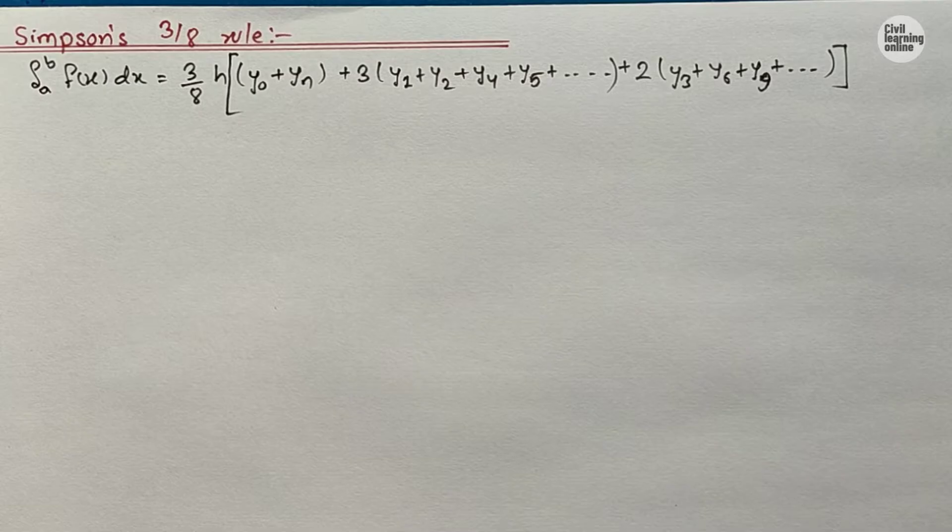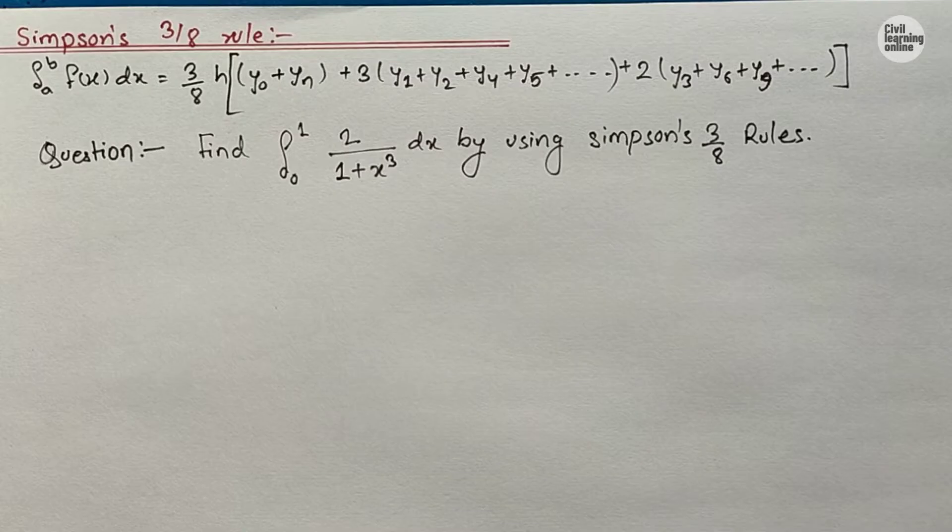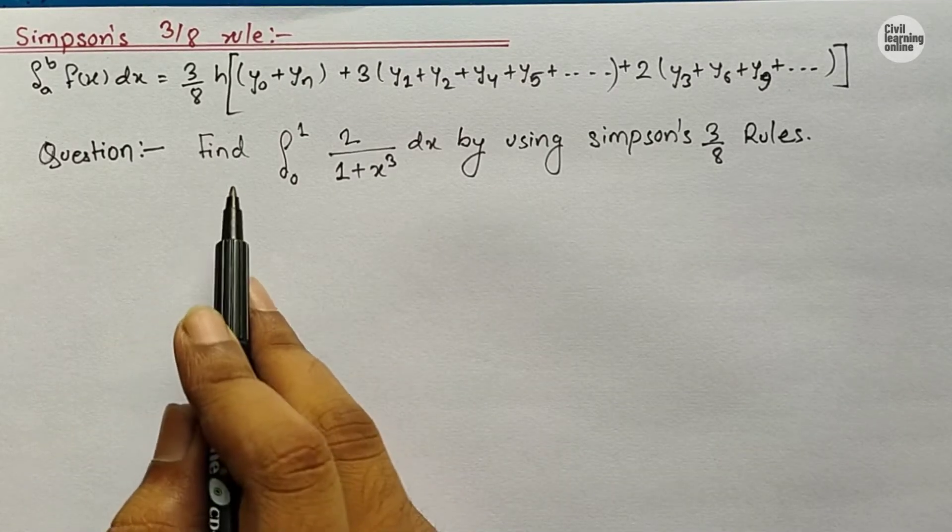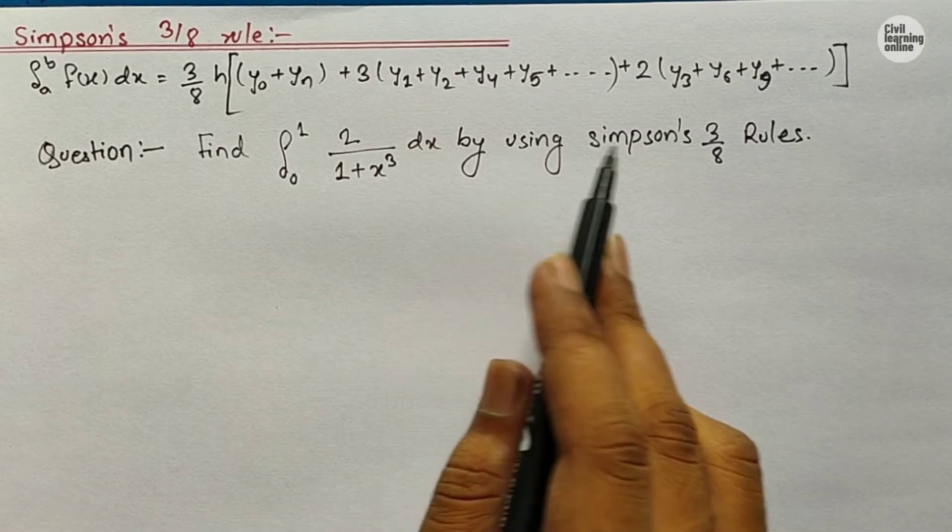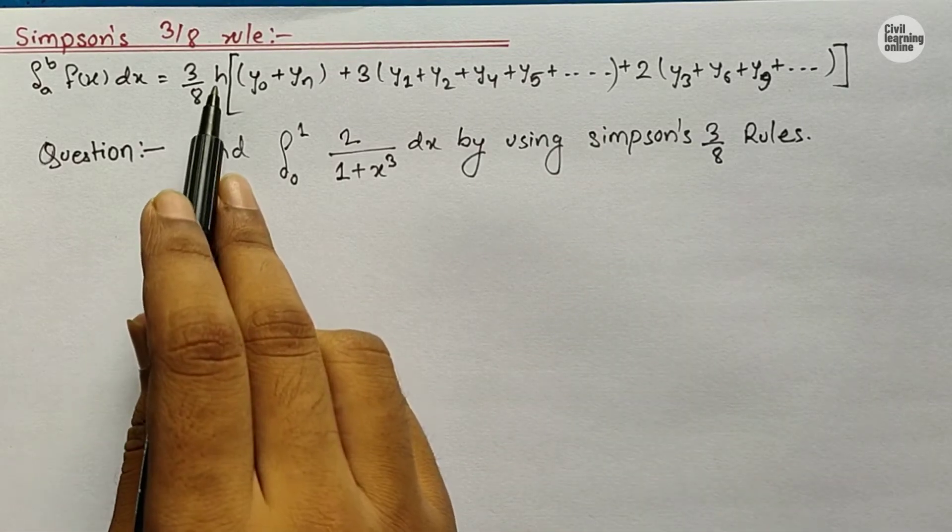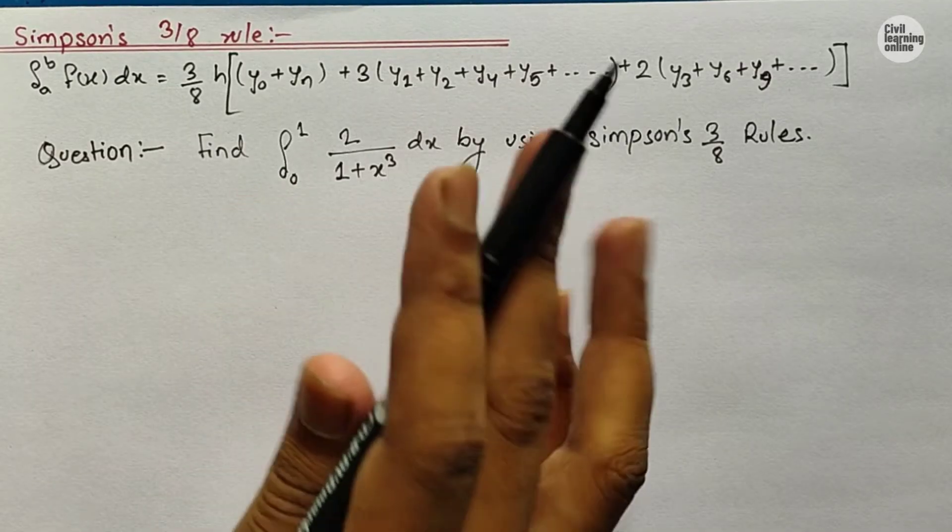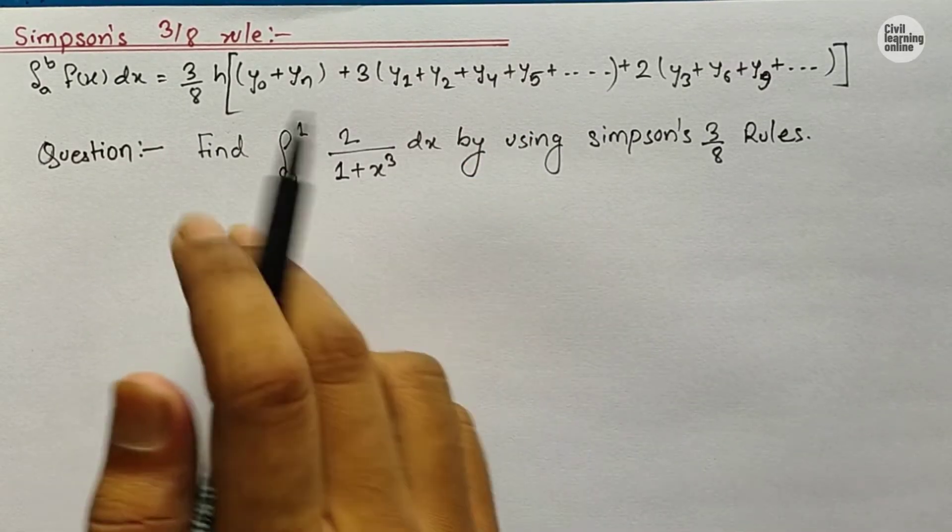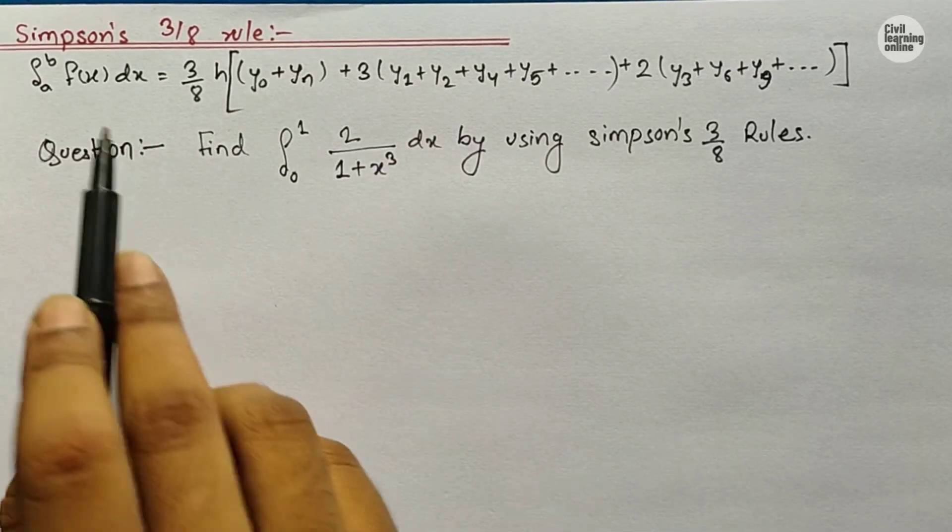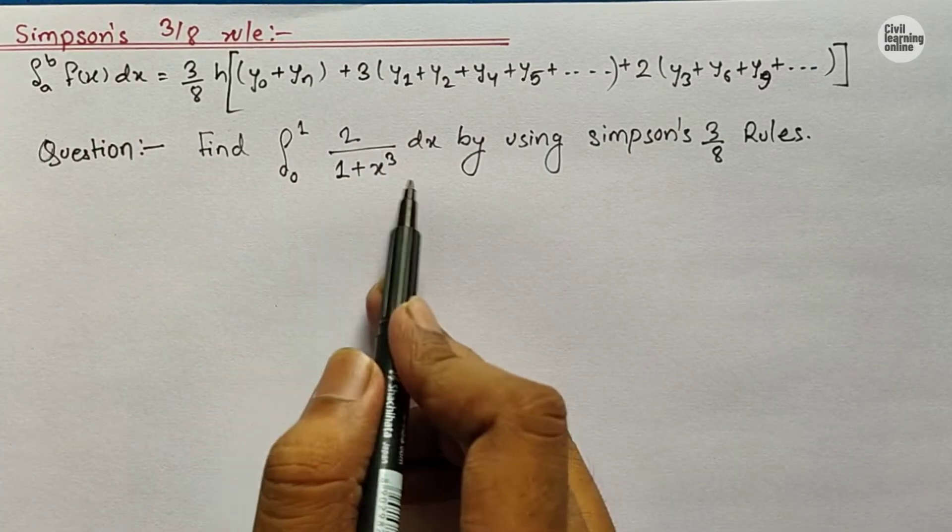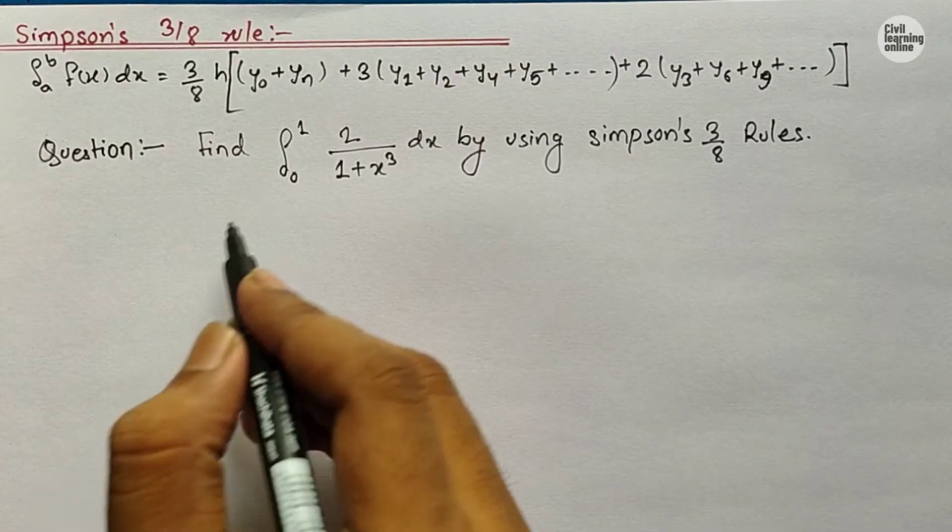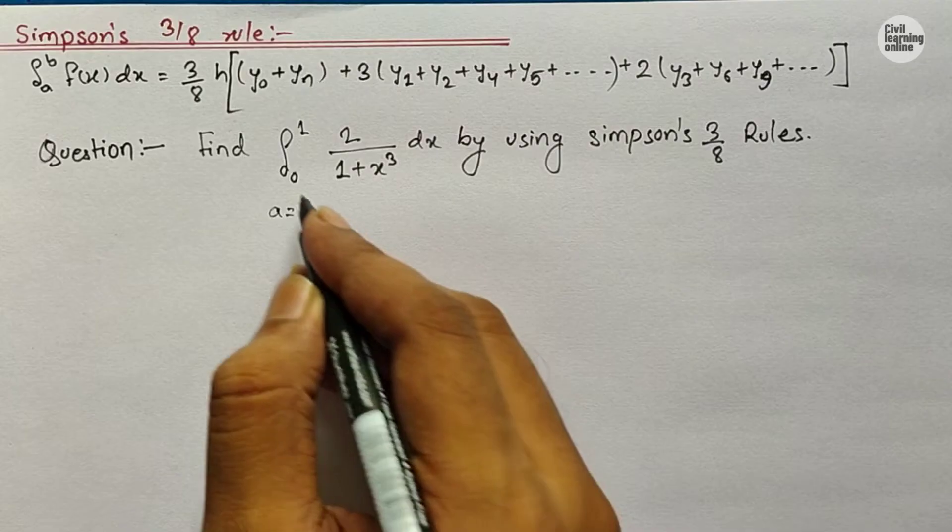Now after having looked toward the formula, we will go for a numerical based upon this rule. And here we go. So here we are asked to find or evaluate integration of 2/(1+x³) dx from lower limit 0 to 1 by using Simpson's 3/8 rule. First of all, we need to calculate the value of h, y0, yn accordingly. Then after calculating the values, we will put those values to the corresponding variables and calculate the final answer. If we compare this term with our formula, then from here we will get that a equals 0 and b equals 1.